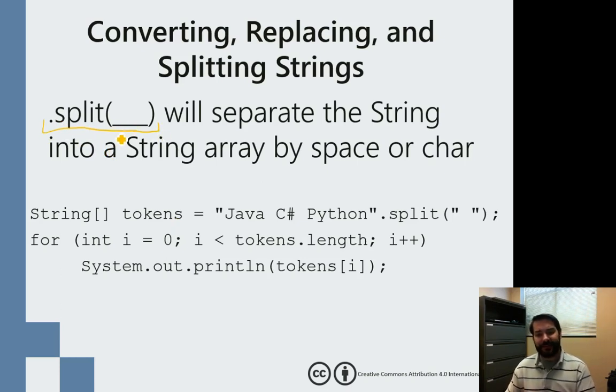What happens with the split method is it'll take whatever's inside its parameter, and it will actually turn the string into an array of strings, a string array. If you think about it, we've got Java, C sharp, Python - three words all separated by spaces.